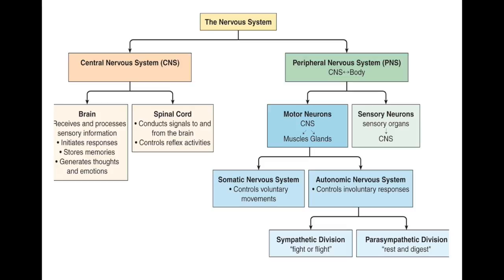Just think of autonomic as automatic. Somatic is skeletal muscle or voluntary movements. When you dissect the autonomic nervous system, we come to two different types of reactions: the sympathetic division that controls our fight-or-flight response, versus our parasympathetic division which is our rest-and-digest or R&R response.